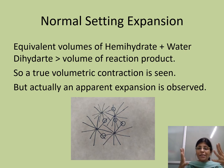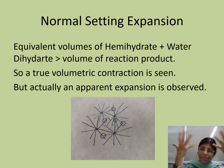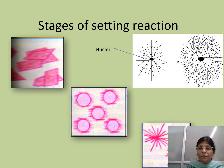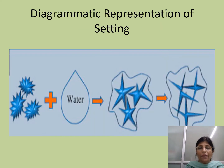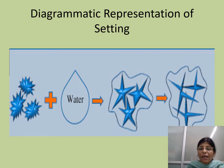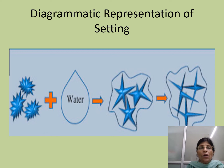Although the volume of the water and powder combined is less than the product, there is an apparent expansion due to the pushing of the particles away from each other — and that is called normal setting expansion. This is also shown in the diagrammatic representation of the setting reaction, where at certain areas there is an interception reaction at which an outward force is created, pushing the particles apart.